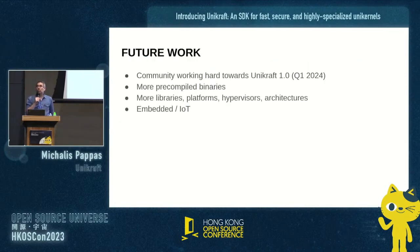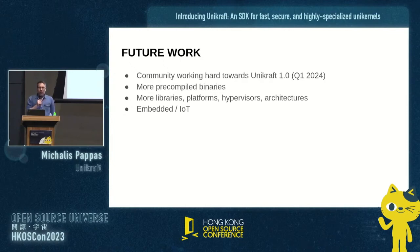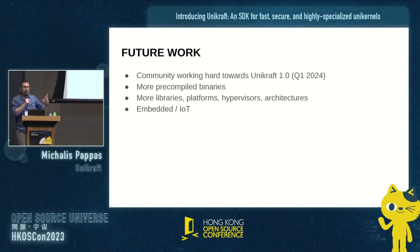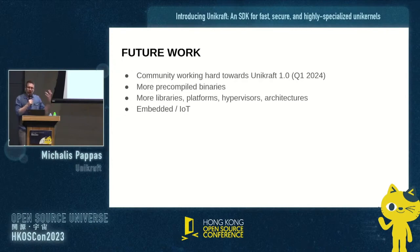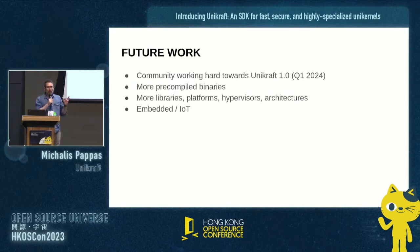For future work, we are working hard towards reaching the 1.0 release, aiming to do that at the beginning of 2024. People are also working on providing more pre-compiled binaries in a repository that people can use and deploy out of the box. Others are working on bringing more libraries, support for more platforms and architectures. There is also a track for embedded and IoT, which Unikraft is a good fit for.